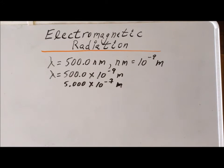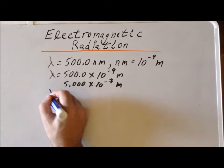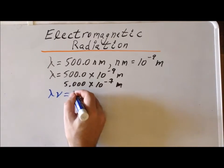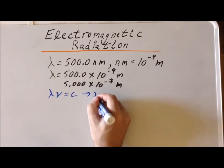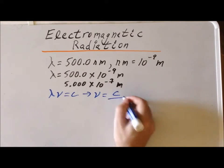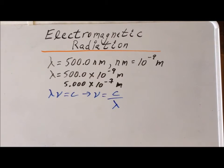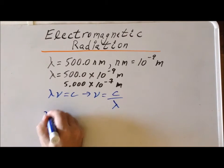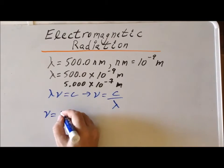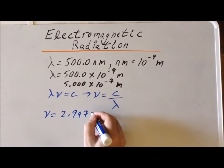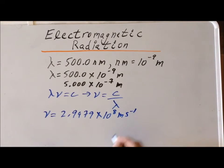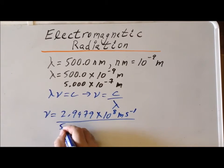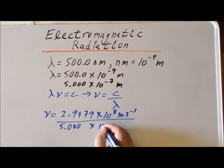We can use our relationship that if we multiply the wavelength times the frequency we get the speed of light. We can manipulate this equation to see that the frequency of the light is going to be the speed of light divided by the wavelength. So our frequency is going to be the speed of light, which we know is a constant of 2.9979 times 10 to the eighth meters per second, divided by the wavelength, which is 5.000 times 10 to the minus 7 meters.